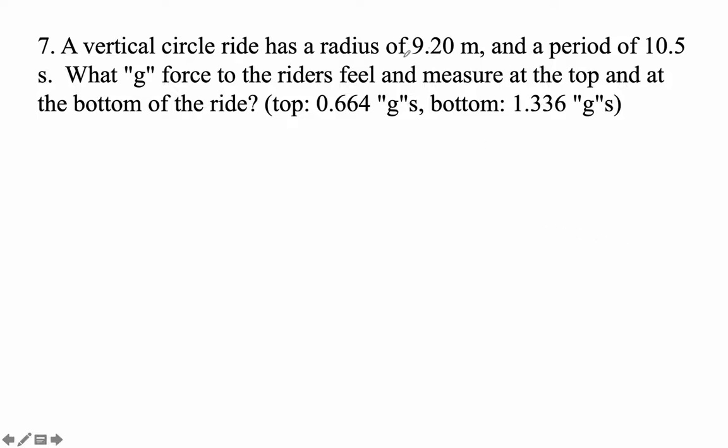A vertical circle ride has a radius, so that's our r, and then the period is the t.